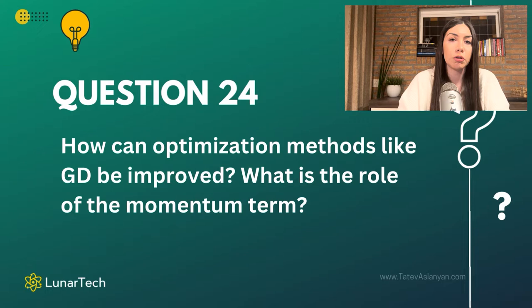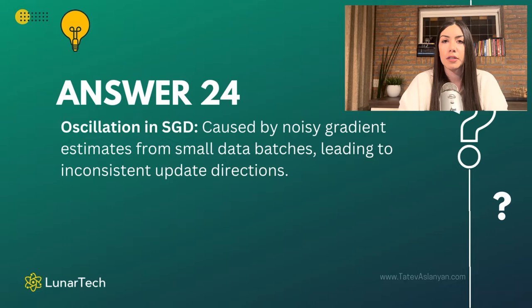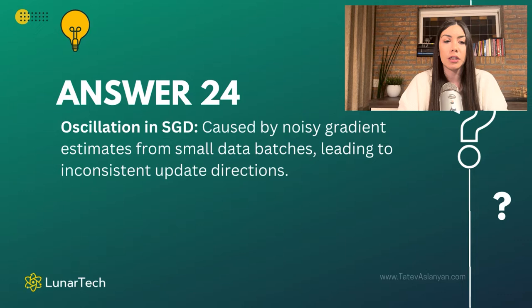We just discussed that GD suffers from oscillations — too many of those movements. Because we are using a small amount of training data to estimate the true gradients, this results in having entirely different gradients and too many different sorts of updates in the weights. That's something we want to avoid, because too many of those movements will end up causing the optimization algorithm to confuse the global optimum and local optimum.